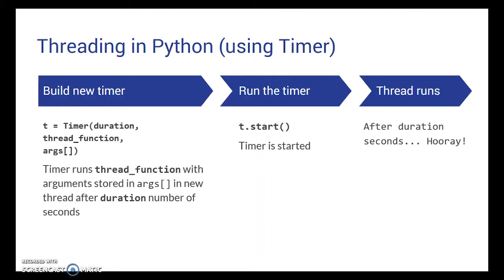So threading in Python, we use the timer class, which basically you specify a duration, what function you want the thread to run, and the arguments that you want to pass into that function when the thread begins.